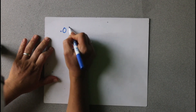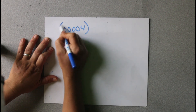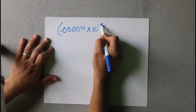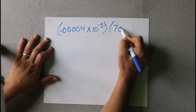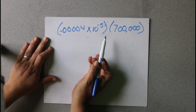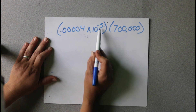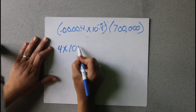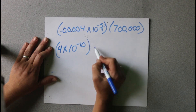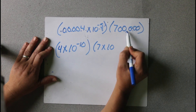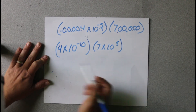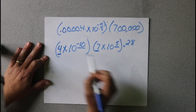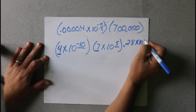The next one: 0.12344 times 10 to the negative 5th, times 7,000. First, we've got to fix this one — move the decimal 1, 2, 3, 4, 5. So 4 times 10, and we moved it 5, so negative 5 is going to be negative 10. And we multiply that times 7 times 10 to the 5th. Now we multiply 4 times 7, and we get 28. Then we add our exponents: negative 10 and positive 5 gives us times 10 to the negative 5.